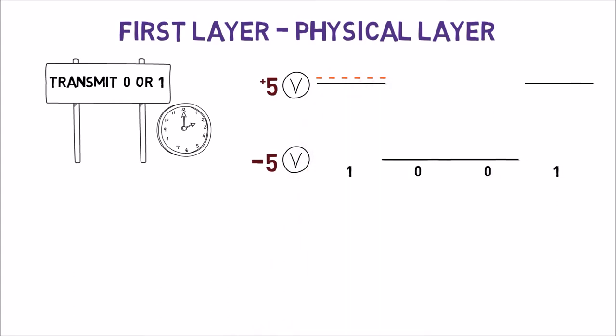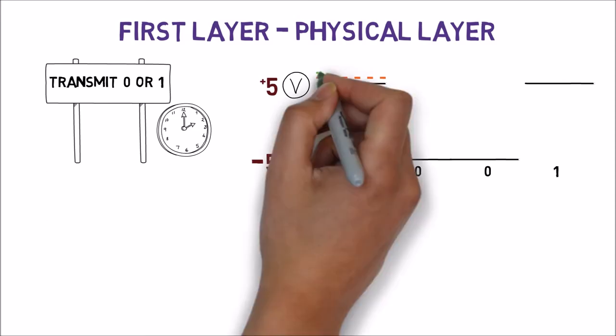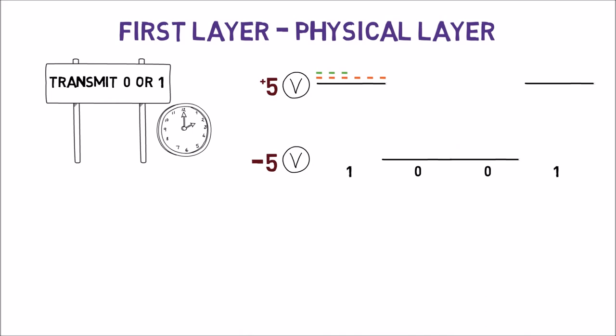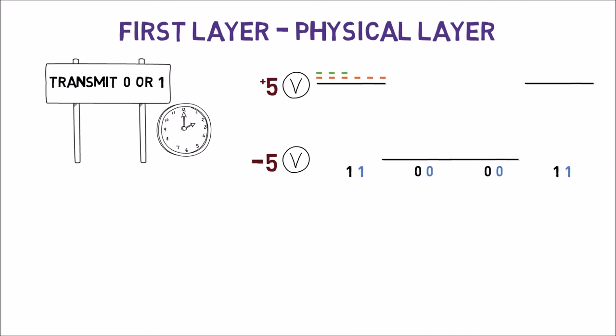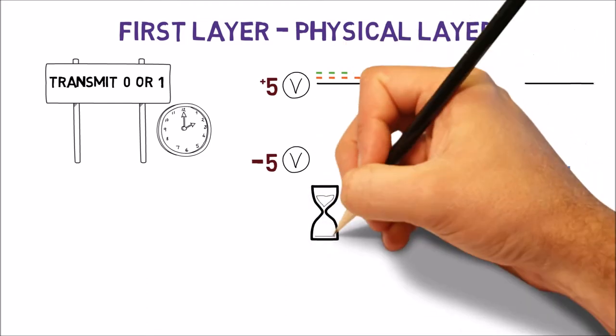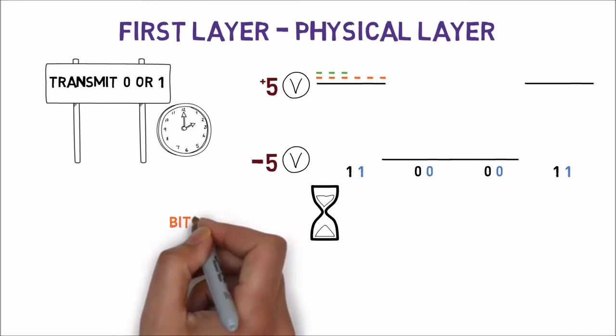However, it might also represent other bit streams. For instance, if it takes only half the time to transmit a single bit, then the bit stream might be 1 1 0 0 0 0 0 1 1. The difference lies in the time we dedicate for transmitting a single bit. This is called the bit rate. That is, the number of bits that are conveyed per unit of time.